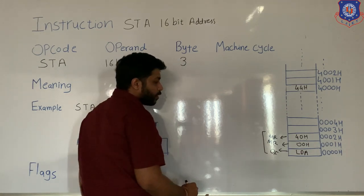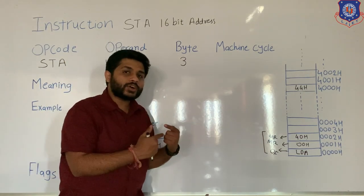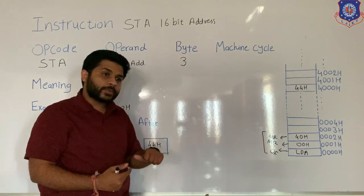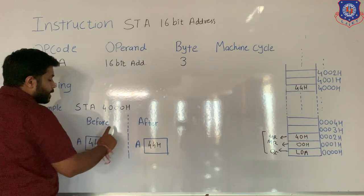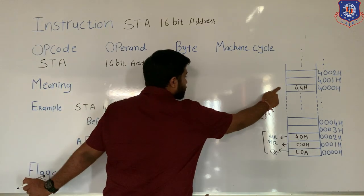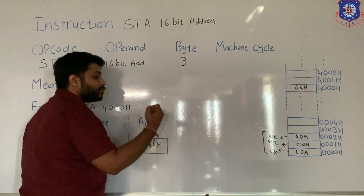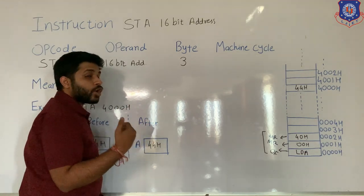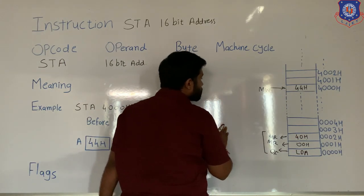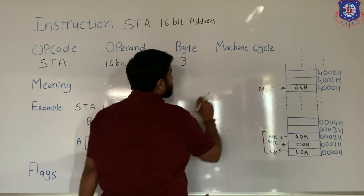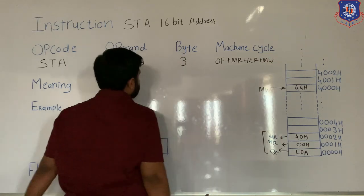After 3 machine cycles, the whole instruction is transferred to the microprocessor. After decoding, the processor executes: the data in the accumulator is transferred to memory — the processor performs a memory write operation. So during execution, one more machine cycle is performed — memory write. Total machine cycles for STA 4000H: opcode fetch, memory read, memory read, and memory write.